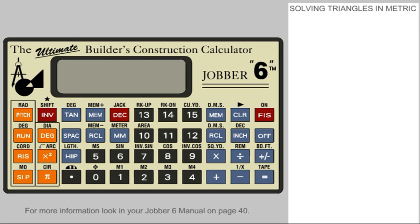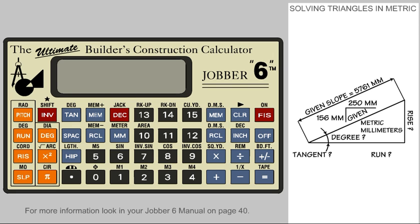Solving triangles in metric: in most cases, a metric pitch is based on a ratio percentage slope of what X number of millimeters is to 250 millimeters, just as the imperial pitch is based on a ratio of what X number of inches is to 12 inches.